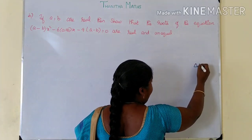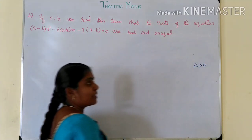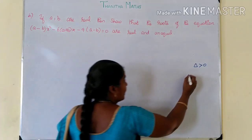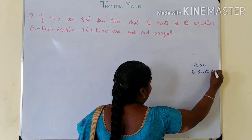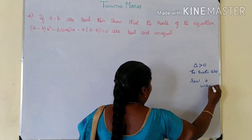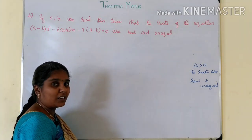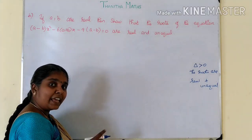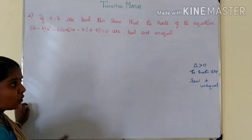Delta greater than 0 means the roots are real and unequal. Delta equal to 0 means the roots are real and equal. So if we prove that the delta value is positive, the roots are real and unequal. We need to find and prove the value of delta for the equation (a minus b) x squared minus 6 into (a plus b) into x minus 9 into (a minus b) equal to 0.